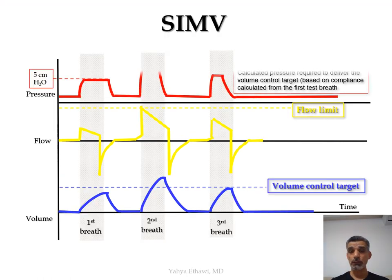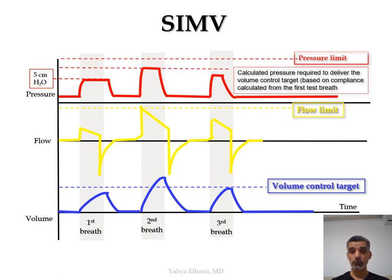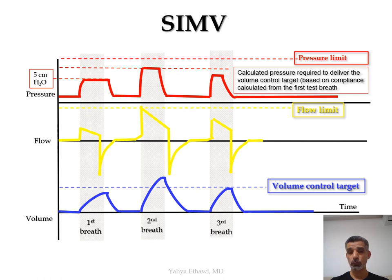Looking at another SIMV example, when the ventilator starts, the first breath pressure and tidal volume are a little low. The second breath, the machine gives more and passes the limit lines to achieve that pressure. By the third breath, it reaches the standard target volume — first is low, second is high, third is normal. Even in the second breath, the pressure curve will never exceed the pressure limit you set for the patient.